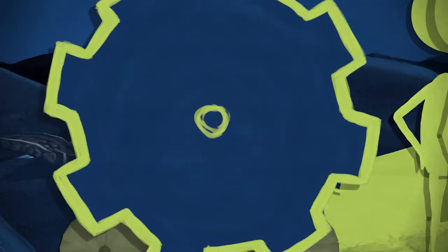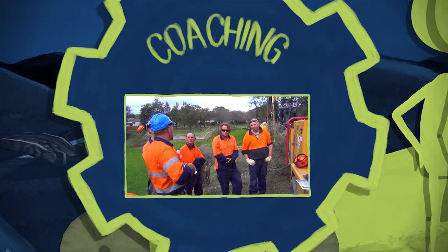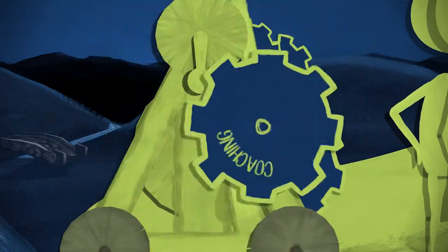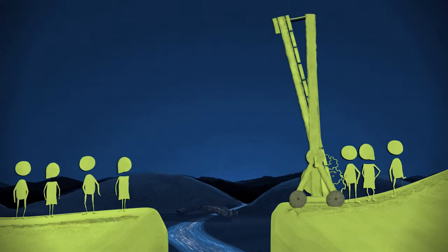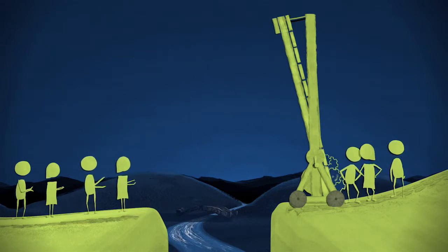The next cog was called the Coaching cog, and that taught the people how to work together. The excitement from Collaboration, coupled with the skills from Coaching, helped everyone see how the mechanism could actually help lower the drawbridge easily, and the cogs began to turn. Slowly at first, but definitely turning.